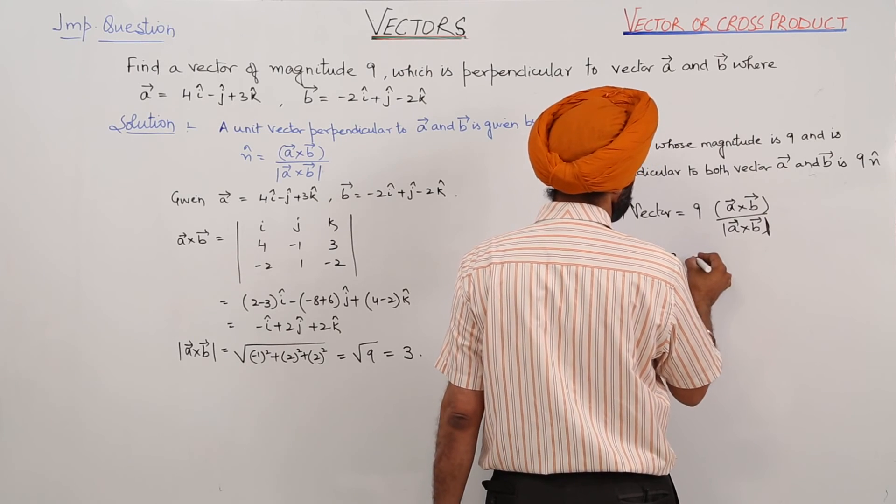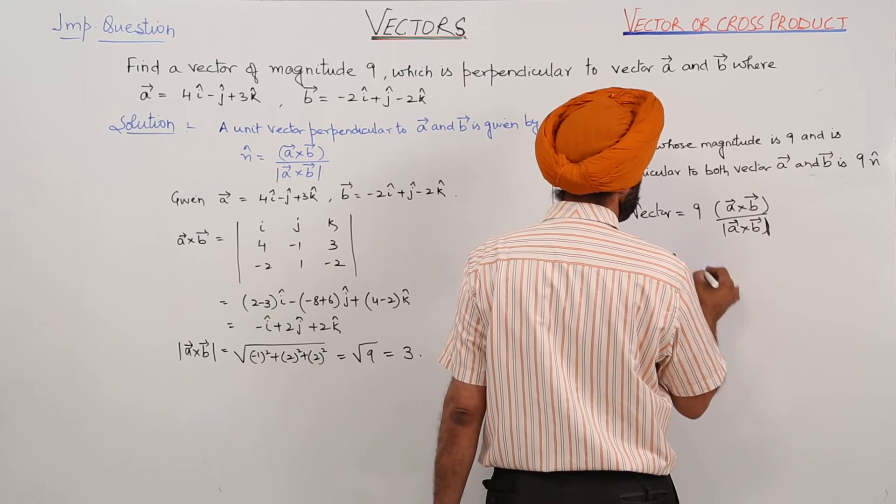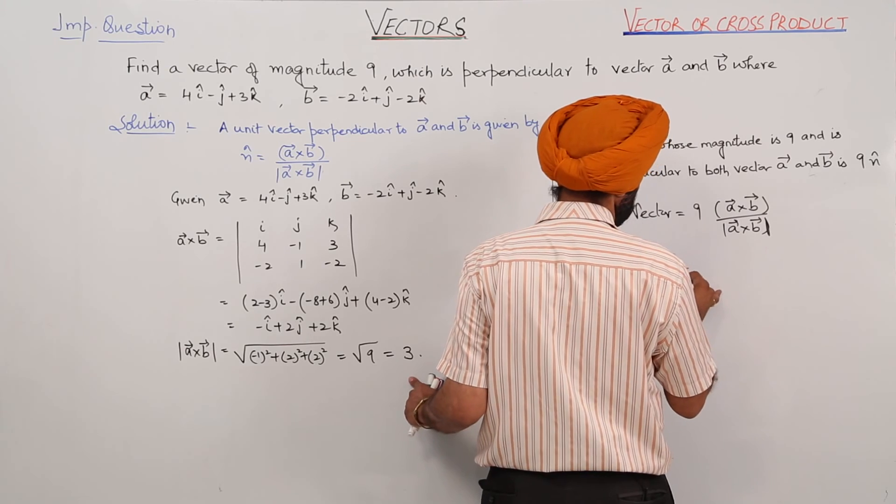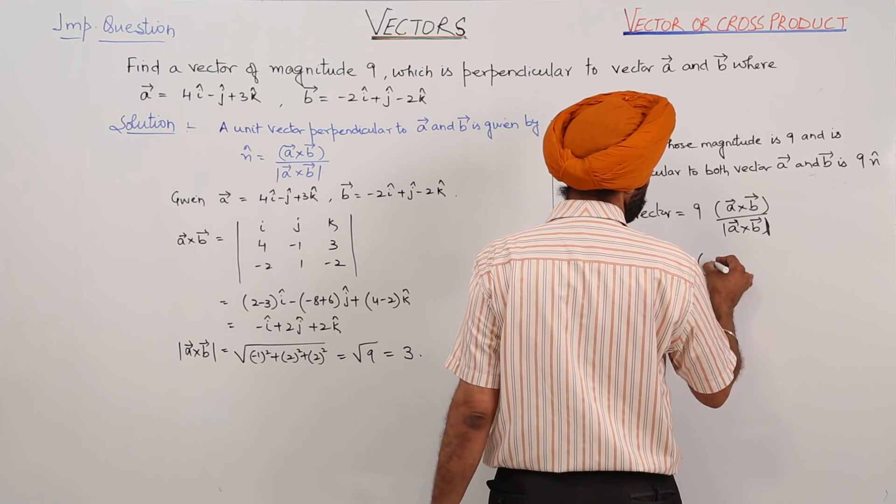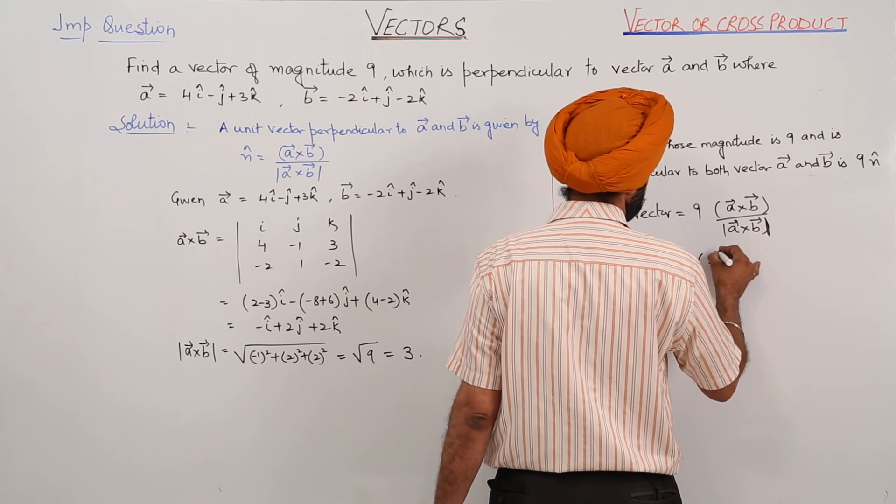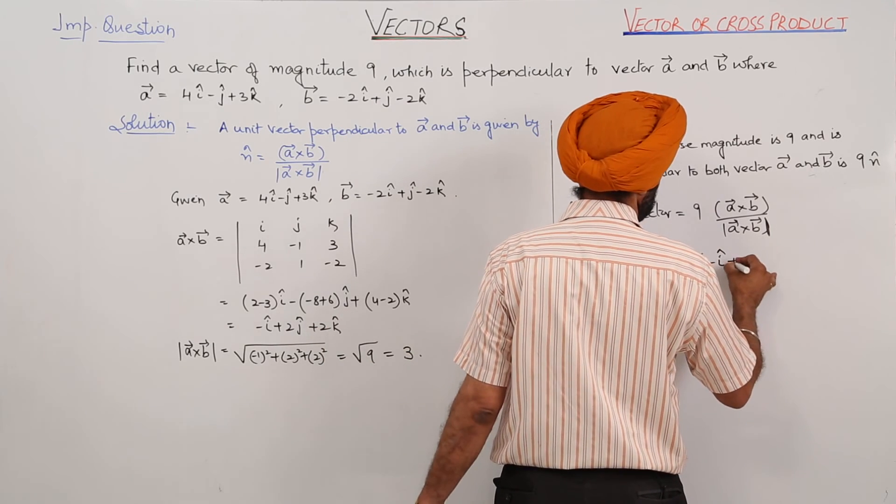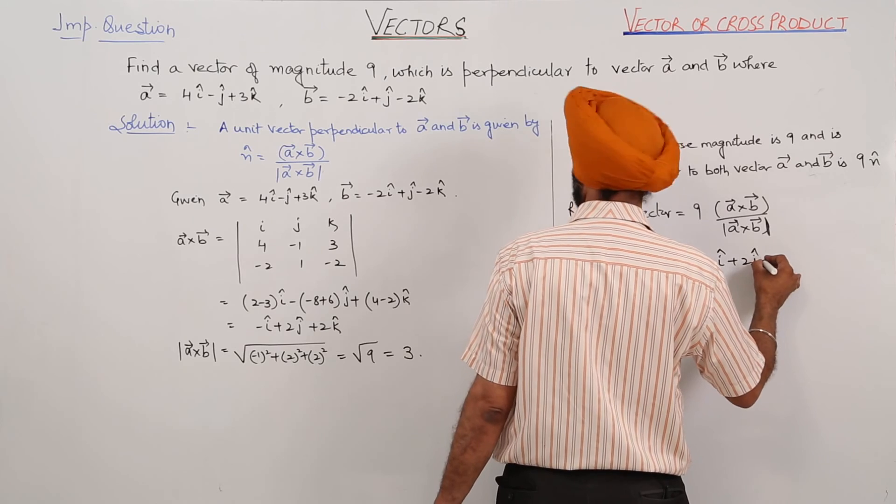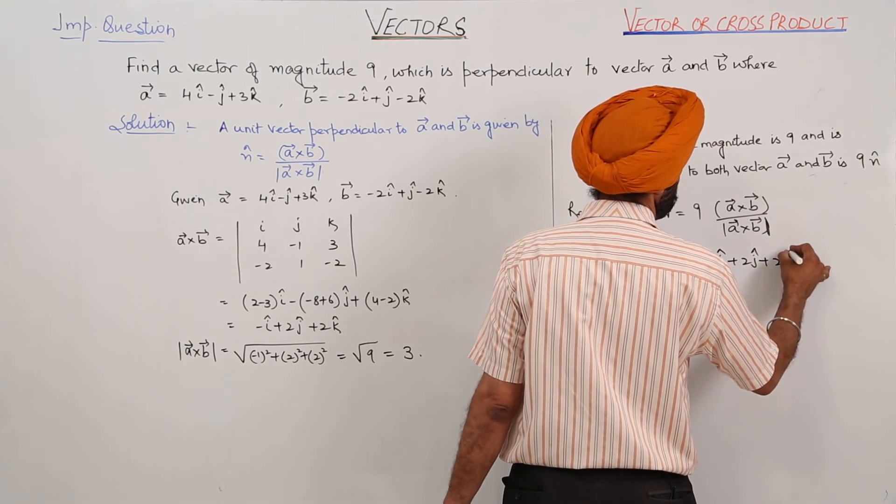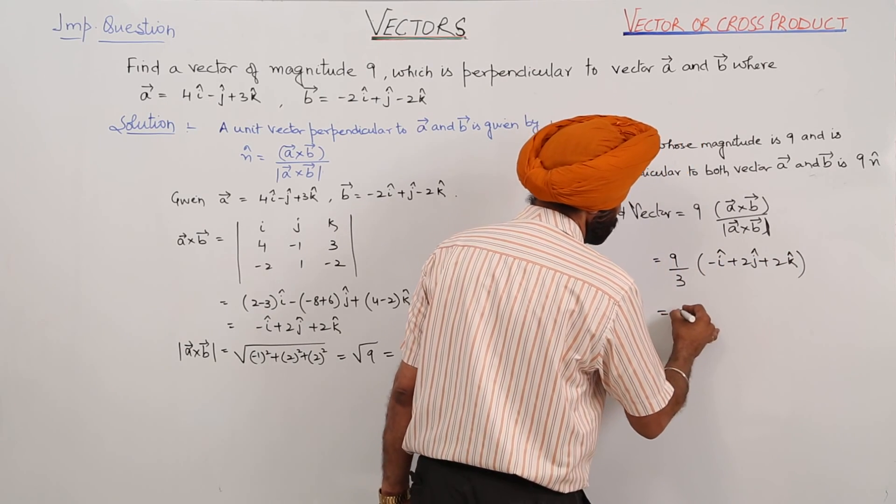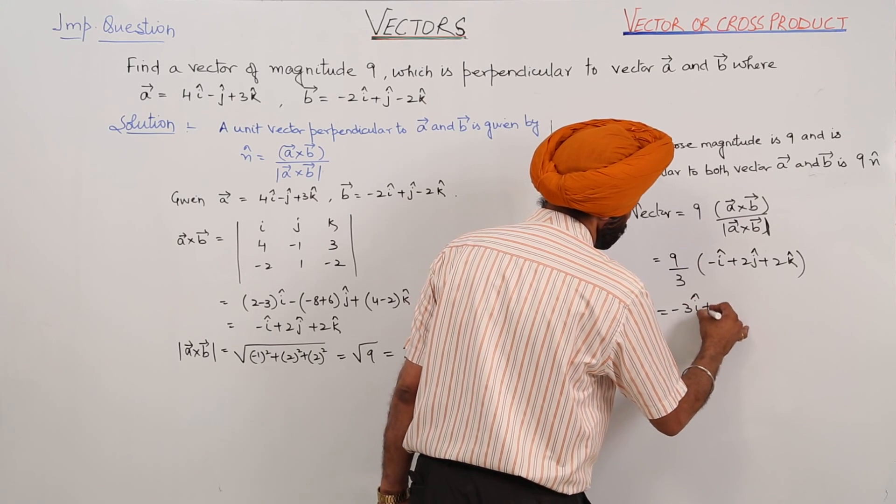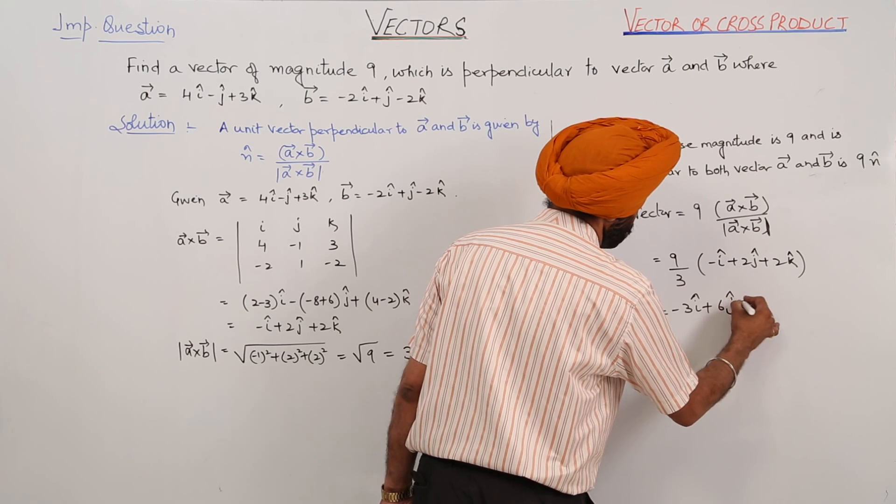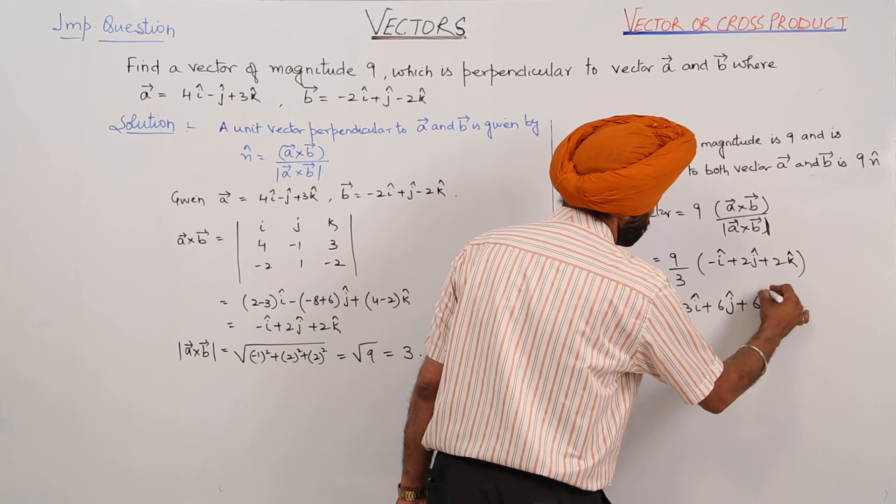This equals 9 divided by 3 times (minus i cap plus 2j cap plus 2k cap), which equals negative 3i cap plus 6j cap plus 6k cap.